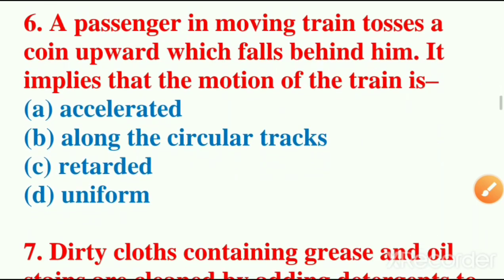Sixth question: a passenger in moving train tosses a coin upward which falls behind him. It implies that the motion of the train is what? Options are accelerated, along the circular tracks, retarded, fourth option is uniform. So the correct answer is accelerated, option A.